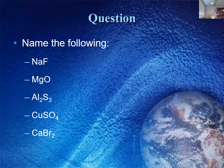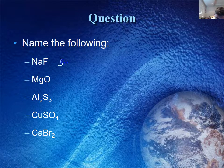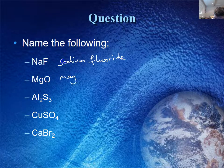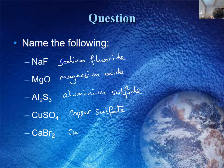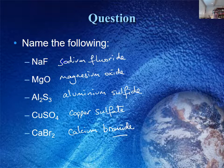Here's a quick exercise — you can pause the recording and have a go yourself, then compare your answers. The first one is sodium fluoride. The second is one we looked at previously: magnesium oxide. The third is aluminium sulfide. The fourth is copper sulfate. And the last is calcium bromide. The charges and naming conventions will become more important as we go further into nomenclature. Thanks for watching.